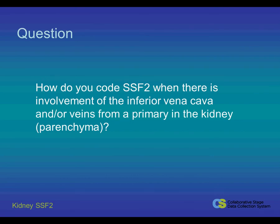In this presentation we're going to address the issue of coding vein involvement from a primary in the kidney. The involvement of veins has prognostic implications because tumor cells can more easily spread through the bloodstream. Tumor extension into major blood vessels is classified as T3. So our question is, how do you code CS Factor 2 when there is involvement of the inferior vena cava and/or veins from a primary in the kidney?